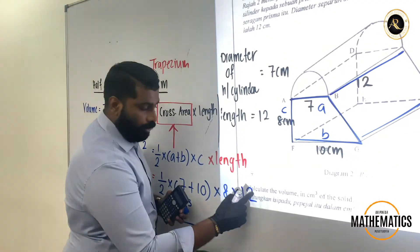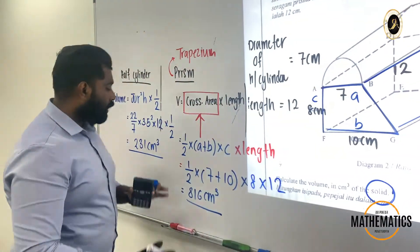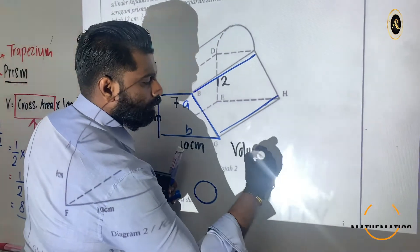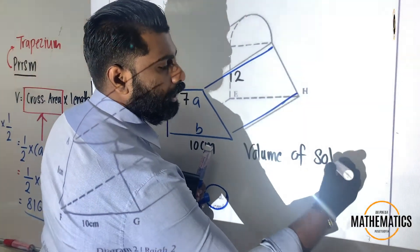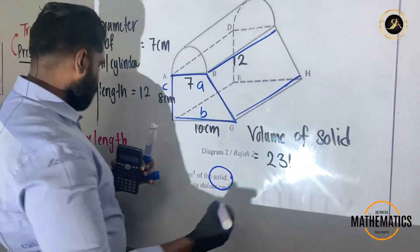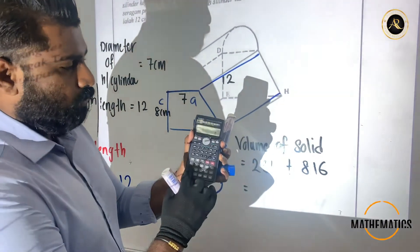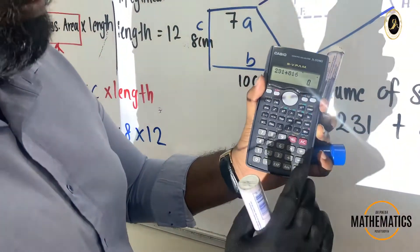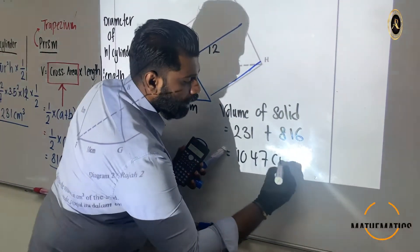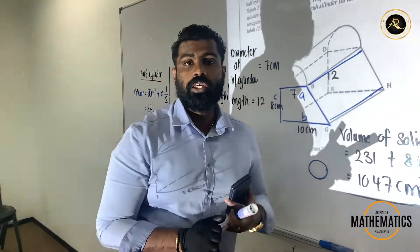But don't forget the question says calculate the volume of the solid. Solid means they are joining together. When they join, you are going to add the answer. So volume of the solid equals to your 231, your half cylinder, plus with your prism 816. 231 plus with 816, you will get 1047 cm cube. This is the way of answering. See you in the next class. Thank you very much.